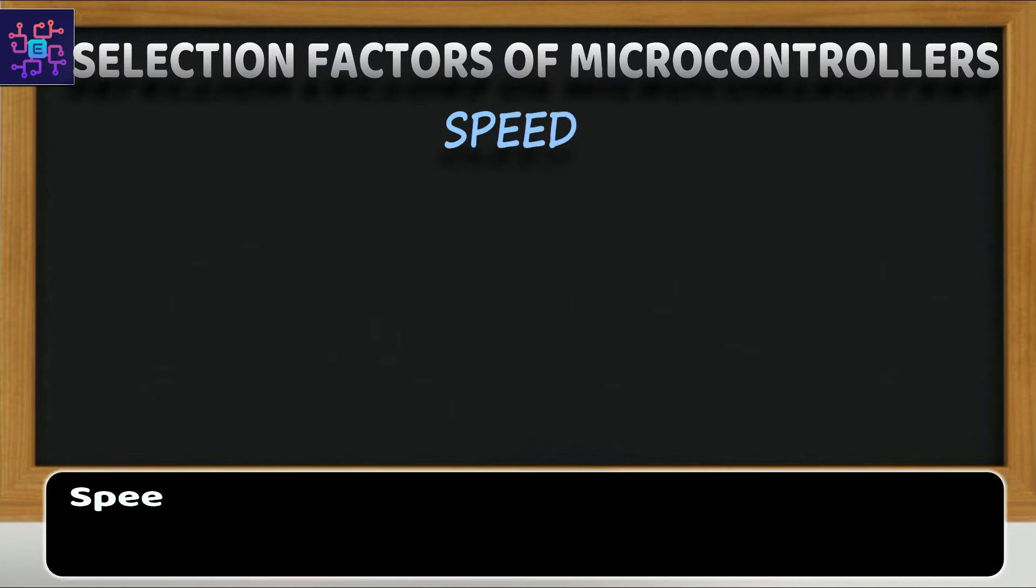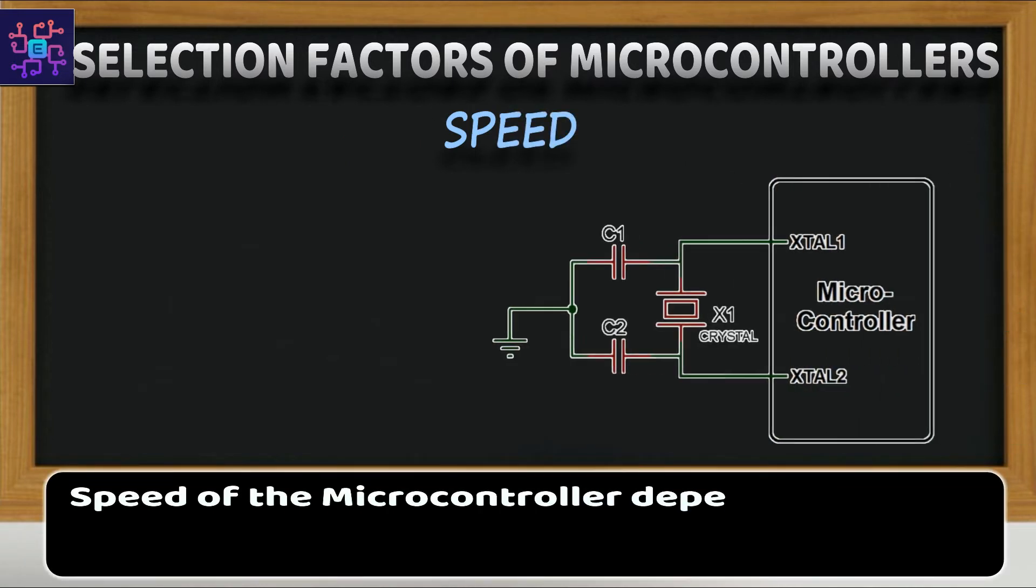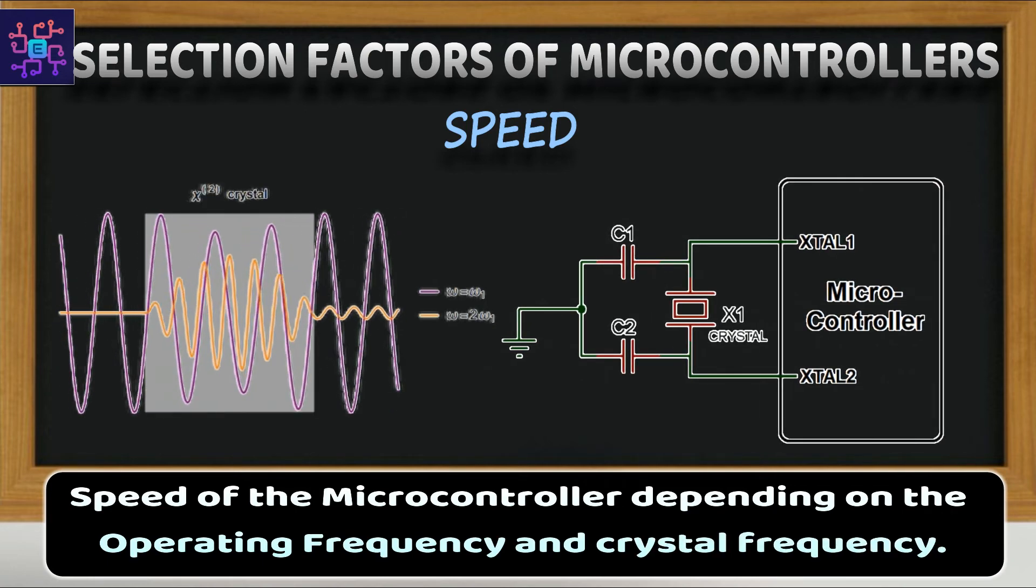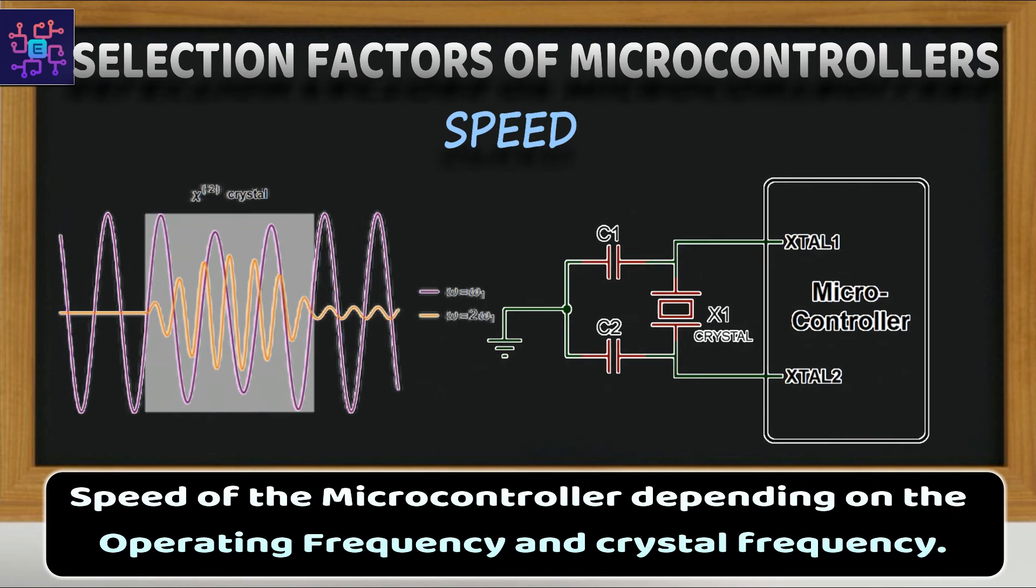Fifth is the speed. The speed of the microcontroller is depending on the operating frequency and crystal frequency. For critical applications faster microcontroller is required.